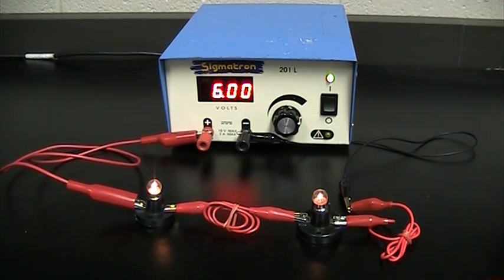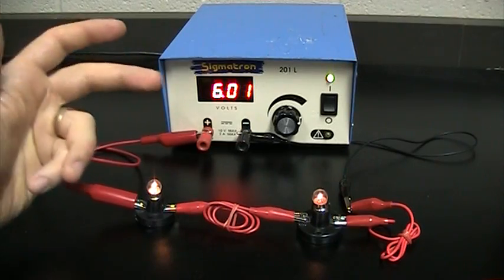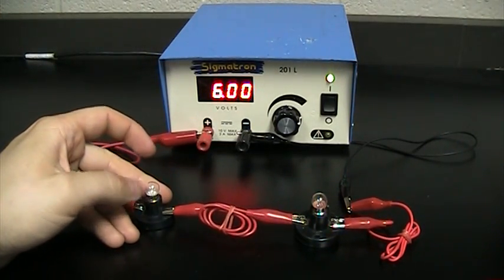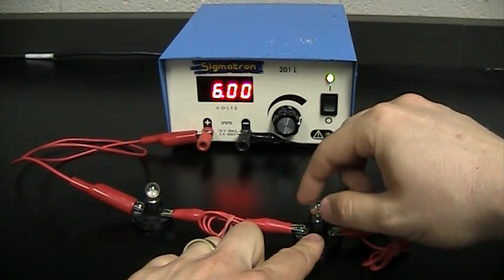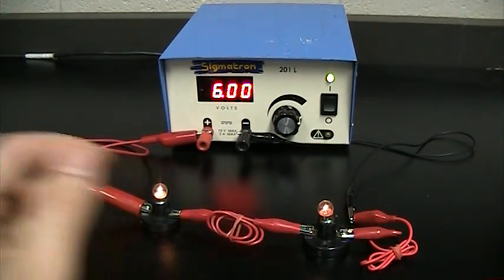A couple things immediately visible is that they've gotten dimmer. Another thing that may not be so obvious is that they need each other. If we unscrew one bulb the other one goes out. It's true in both cases. It does not matter which one's closer to the negative or the positive terminal of the battery.